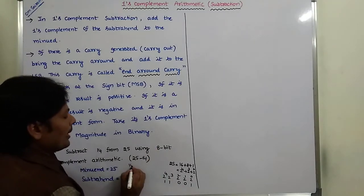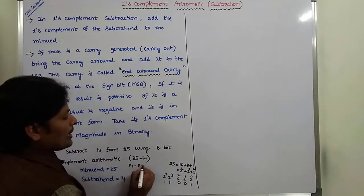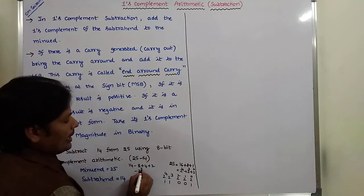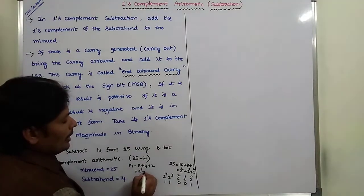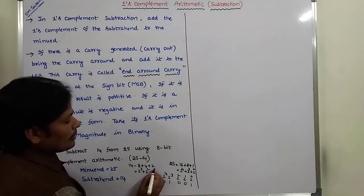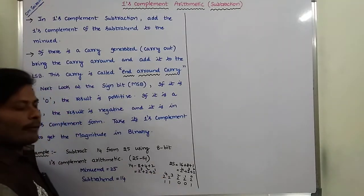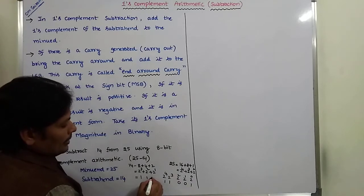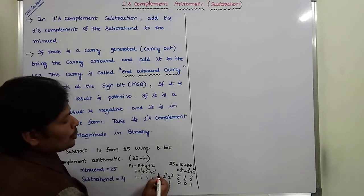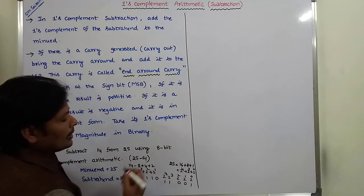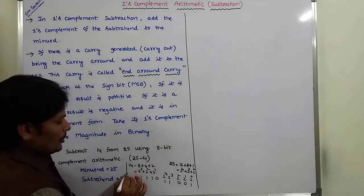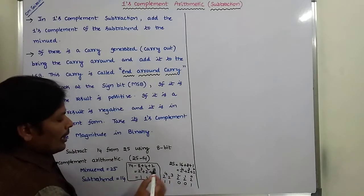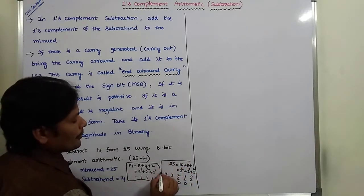Next, 14 can be written as 8 plus 4 plus 2, that means 2 power 3, 4 can be written as 2 power 2, and 2 can be written as 2 power 1. So the bits for those positions are 1, 1, 1, and 2 power 0 term is not there, so the last bit is 0. This is the binary form of 14.